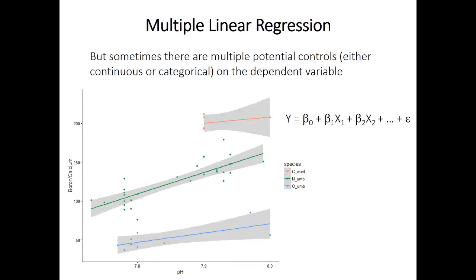In many situations there's more than one potential controlling factor. In the case of the pH and boron-calcium relationship, there are three different species of organisms in the study. Each species differs quite substantially in its boron-calcium ratio regardless of pH. Adding species identity as a second independent variable, the R-squared increases to 0.92 — remarkably better. Note that species is a categorical variable, and it is perfectly valid to include categorical variables along with continuous ones as independent variables in multiple regression.